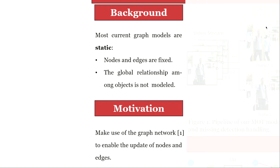As you all know, most graph models are static, which means that nodes and edges are fixed. Moreover, in these graph models, the global relationship among objects is not modeled. These graph models will fail when the information contained by nodes or edges is outdated.